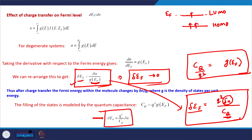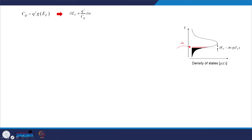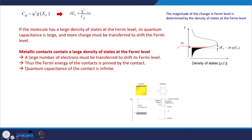As we put more electrons the electrochemical potential changes, and that is modeled by the quantum capacitance. This is an important point to keep in mind while dealing with quantum dot systems. Pictorially, as we put more electrons the Fermi level is altered, and it is inversely related to the density of states at the Fermi level.